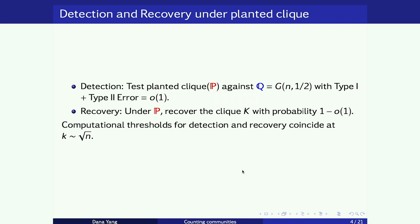Aside from the recovery problem, we also talk about the detection problem: testing whether or not there is a planted clique. That is testing the planted clique distribution against an Erdős–Rényi graph where edge probabilities are i.i.d. Bernoulli(1/2). We want a test achieving vanishing type-1 plus type-2 error as the graph size grows to infinity. For the planted clique problem, the computational threshold for detection and recovery coincide at the root-N level, but in general that is not the case.